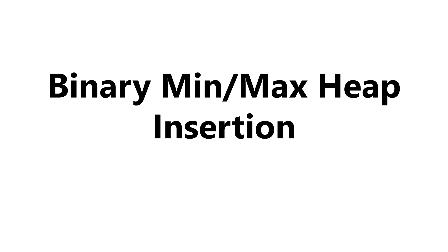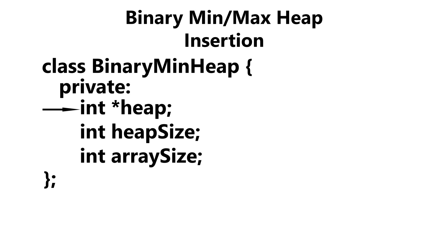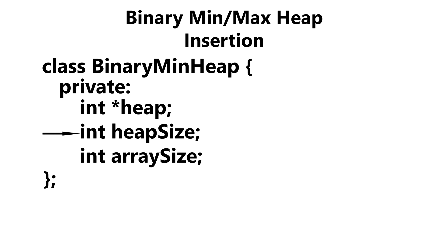We're going to start with our private data members. We have our heap, which is going to be the array we store our data in. Our heap size is going to keep track of the number of elements within our array and make sure we have enough space to insert — it's also used to insert at the last available position. And our array size is obviously going to be the size of our array.